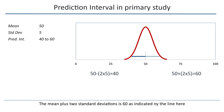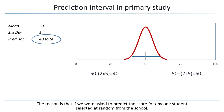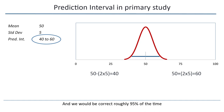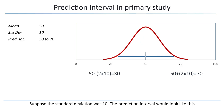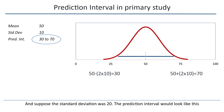This interval is called a prediction interval. The reason is that if we were asked to predict the score for any one student selected at random from the school, we would predict that the student would score between 40 and 60, and we'd be correct roughly 95% of the time. Another 5% of students fall to the left or to the right of this interval. Suppose the standard deviation was 10 — the prediction interval would look like this. And suppose the standard deviation was 20 — the prediction interval would look like this.